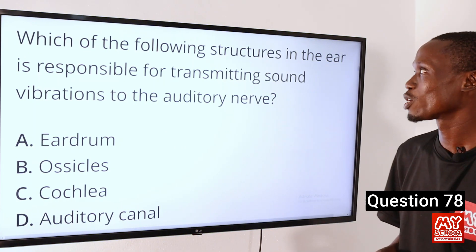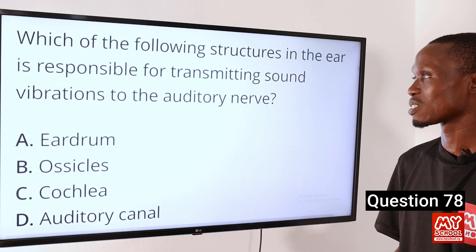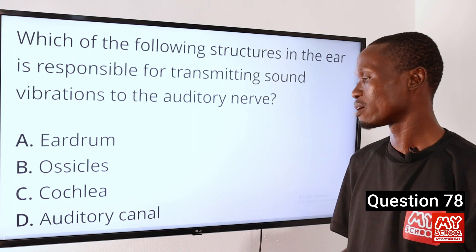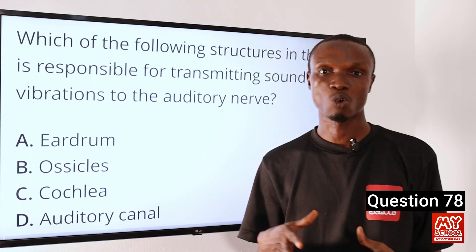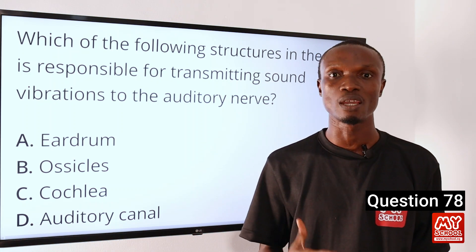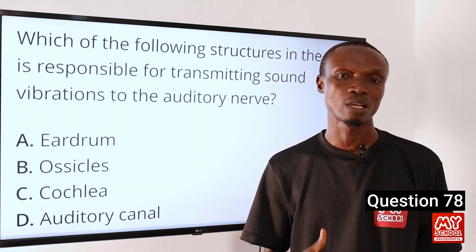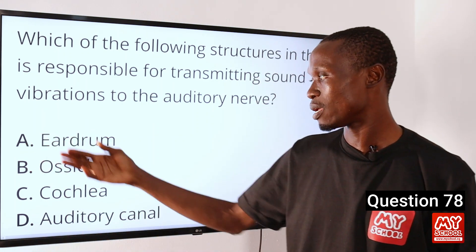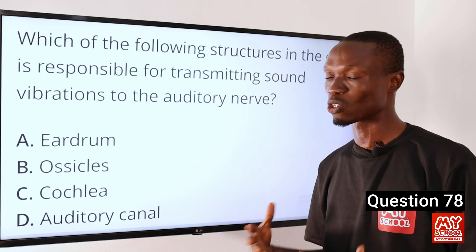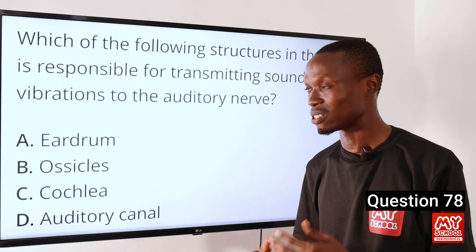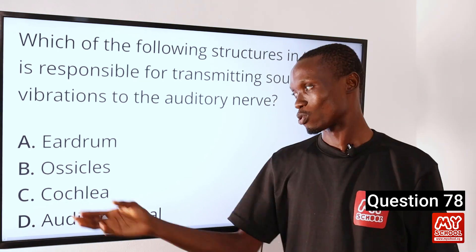Question 78: Which of the following structures in the ear is responsible for transmitting sound vibration to the auditory nerves? A: Ear drum. B: Ossicles. C: Cochlea. D: Auditory canal. The answer is option C, the cochlea. The cochlea is a spiral-shaped structure in the inner ear, filled with fluid and lined with cells with very fine hair. This hair moves when the fluid in the cochlea moves, thereby converting sound vibrations into nerve signals that the brain can interpret. The ear drum and ossicles transmit sound vibration into the cochlea, but it is the cochlea that actually converts it into nerve signals. So the correct option is option C.